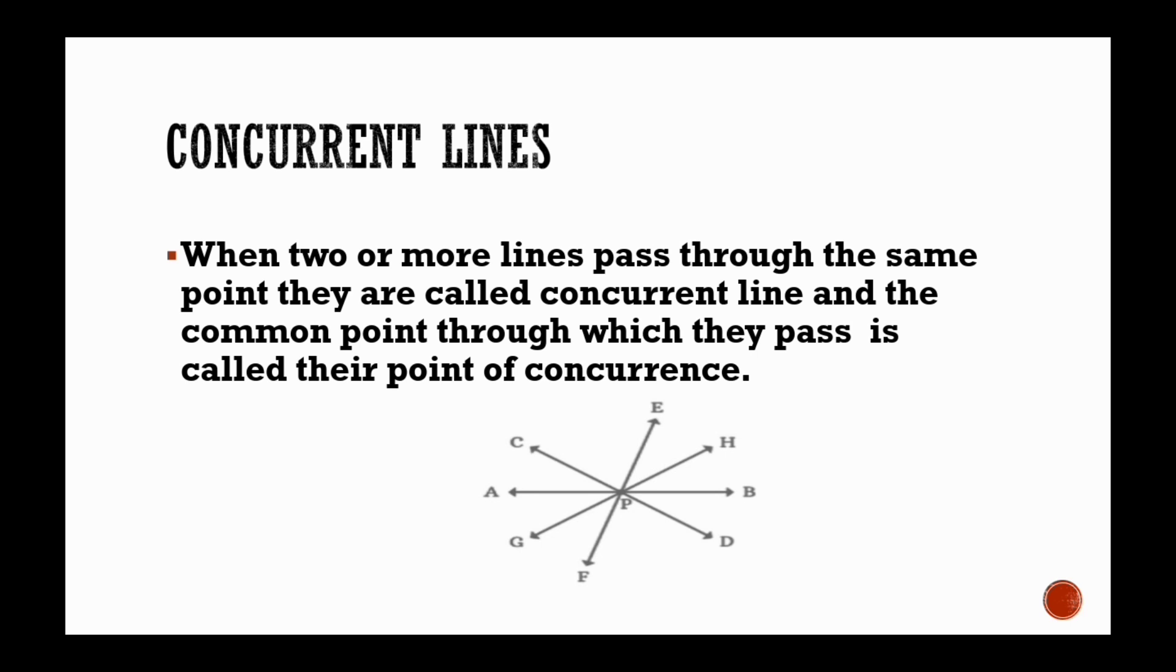And the common point through which they pass is called their point of concurrence. In the following figure, line AB, line CD, line EF and line HG are concurrent lines. And the point P is the point of concurrence.